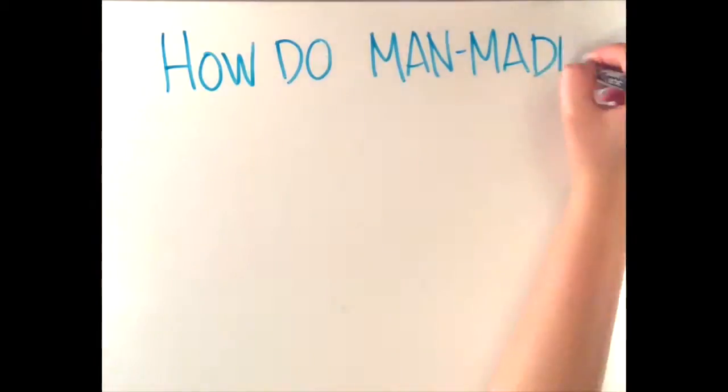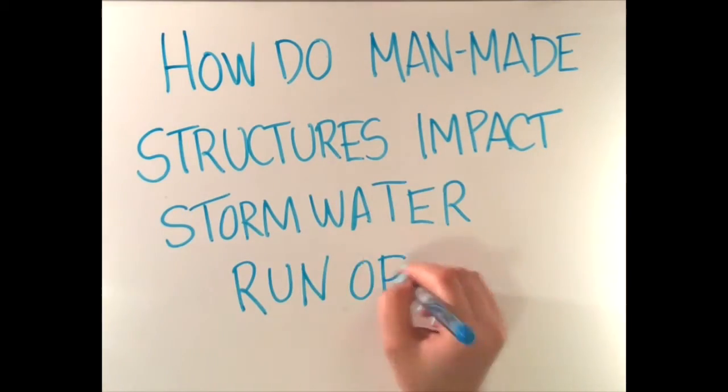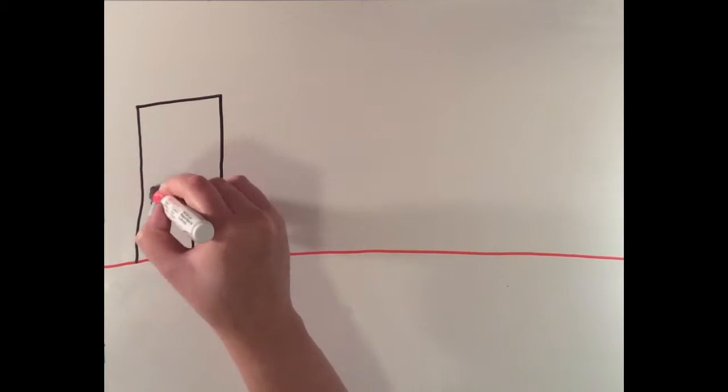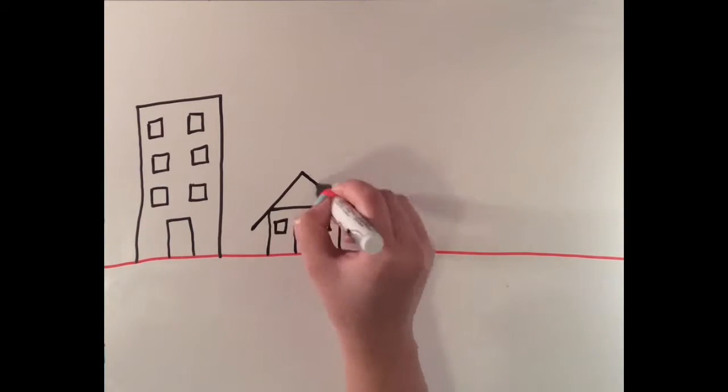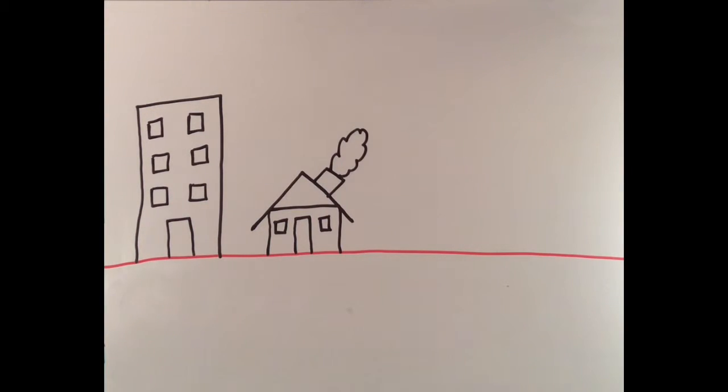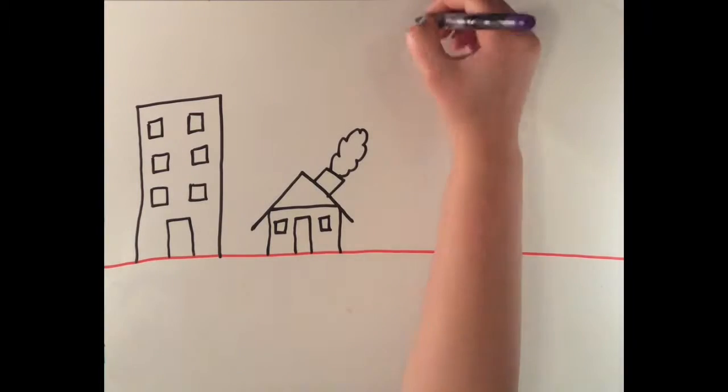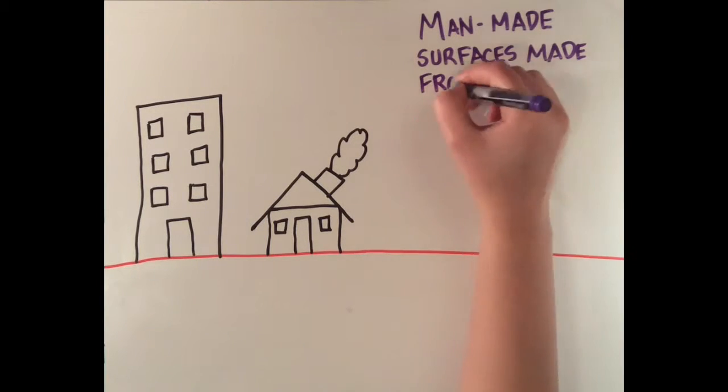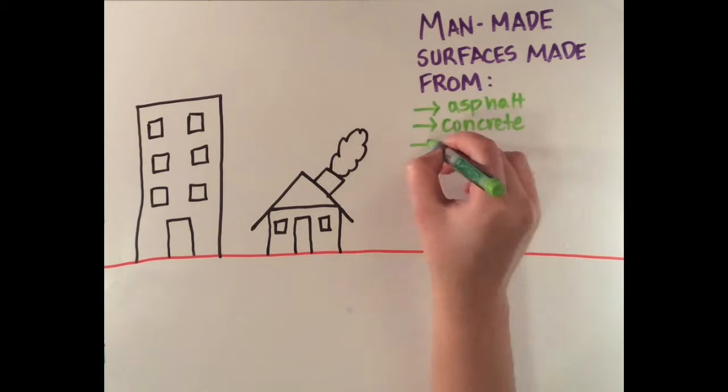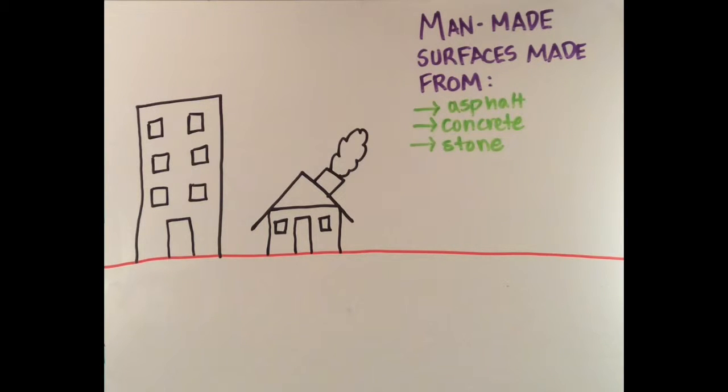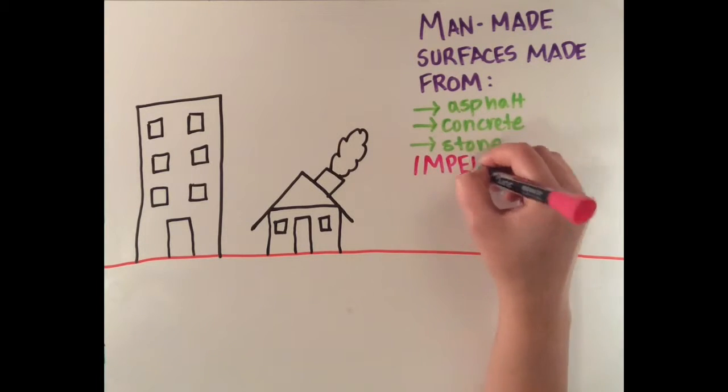How do manmade structures impact stormwater runoff? The addition of manmade objects into the environment changes how stormwater moves through it. A lot of our cities are filled with buildings, and our surface is covered with concrete, asphalt, and different types of stone. These types of materials don't let water flow through them, like different soils do, and are known as impervious surfaces.